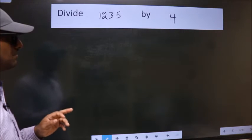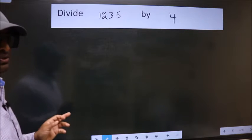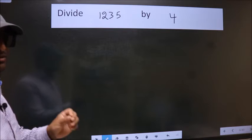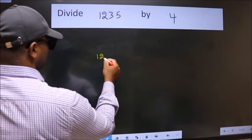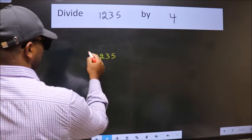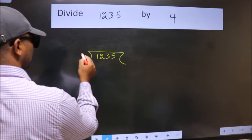Divide 1235 by 4. To do this division, we should frame it in this way: 1235 here, 4 here.